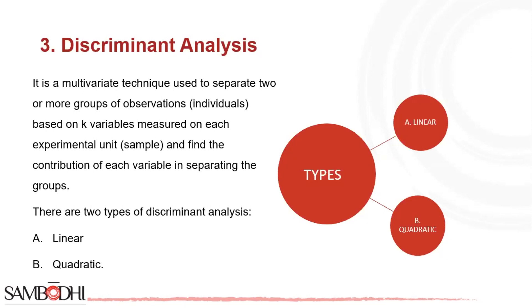Let's understand these two types: linear and quadratic. Linear discriminant analysis, often known as LDA, is a supervised approach that attempts to predict the class of dependent variables by utilizing the linear combination of the independent variables.